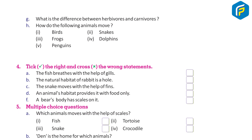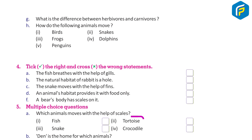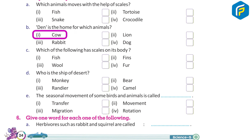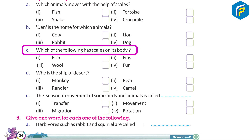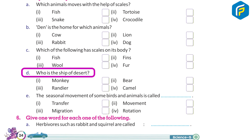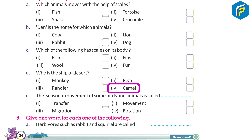Multiple choice questions: A. Which animals move with the help of scales? — 1. Fish, 2. Tortoises, 3. Snakes, 4. Crocodiles. B. A den is the home for which animal? — 1. Cow, 2. Lions, 3. Rabbits, 4. Dogs. C. Which of the following has scales on its body? — 1. Fish, 2. Fins, 3. Wool, 4. Fur. D. Which is the animal of the desert? — 1. Monkey, 2. Bear, 3. Reindeer, 4. Camel.